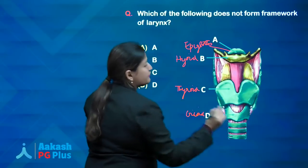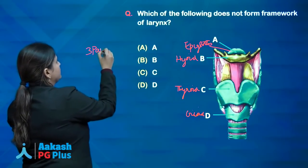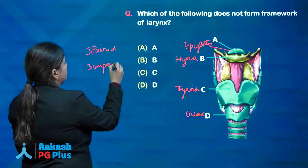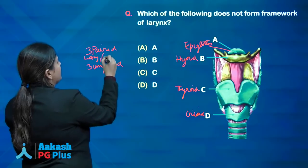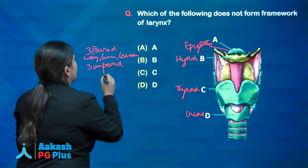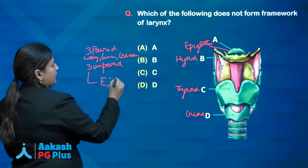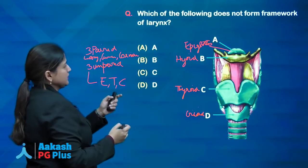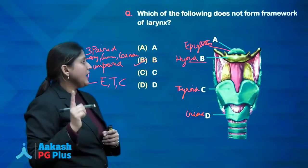The laryngeal framework is formed by 3 paired cartilages and 3 unpaired cartilages. The paired cartilages are arytenoid, cuneiform, and corniculate. The unpaired cartilages are epiglottis, thyroid, and cricoid. So the answer is B — hyoid — it does not form the framework of the larynx.